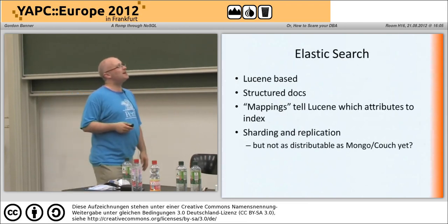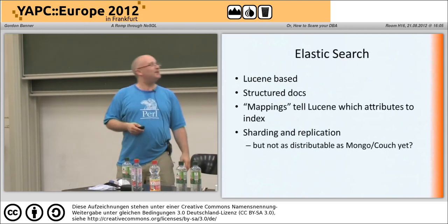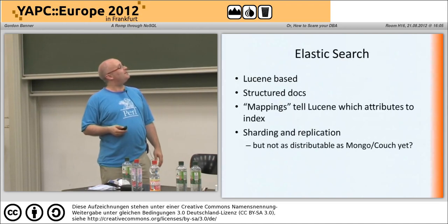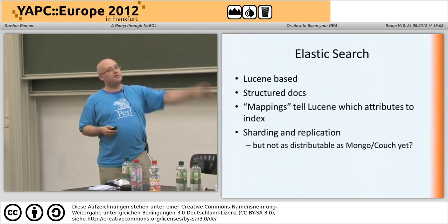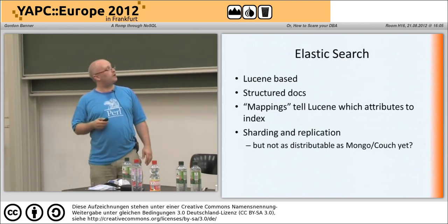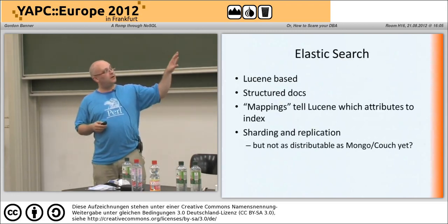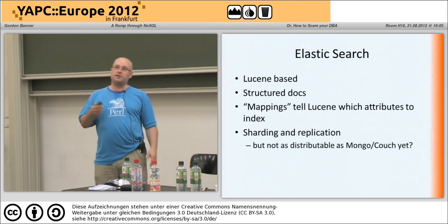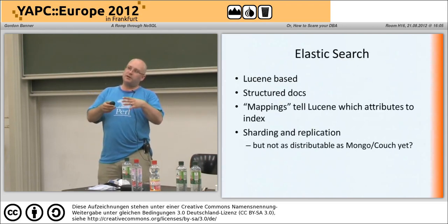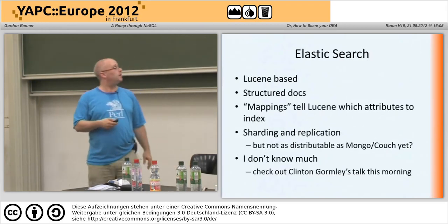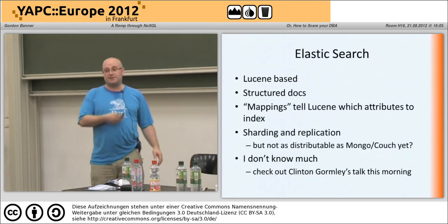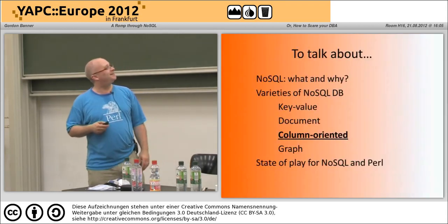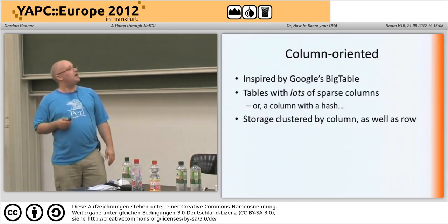Elasticsearch looks quite cool. It's based around Lucene and built around searching. I think it's probably not as good at distribution yet as Mongo or Couch — they were saying this morning that you kind of want to keep it all in one data center at the moment. But check out this morning's talk; I don't want to go on about something I don't know too much about.